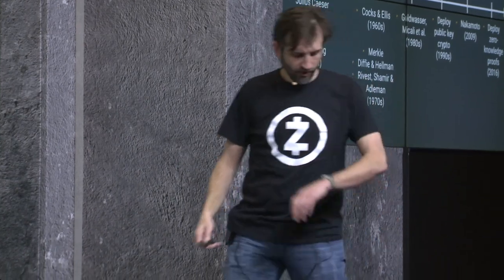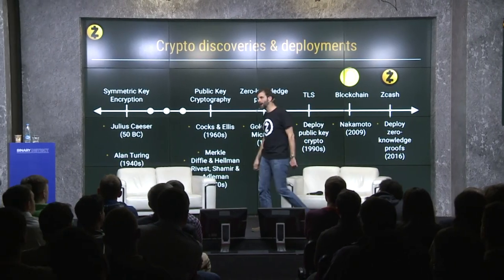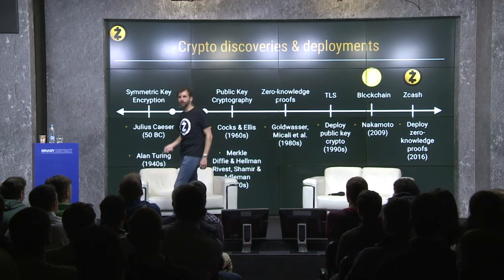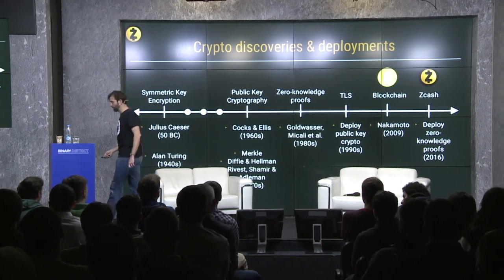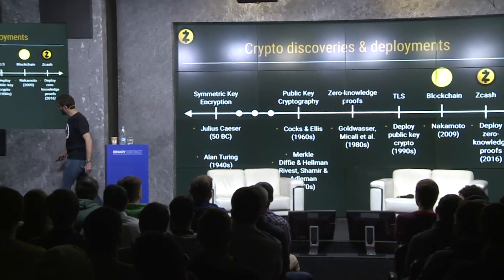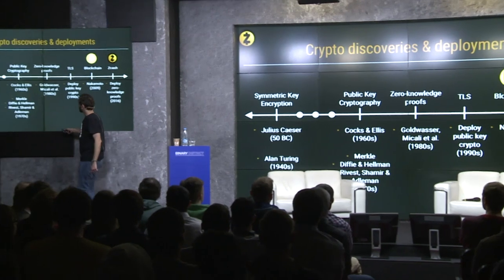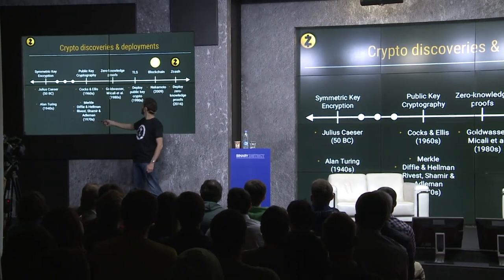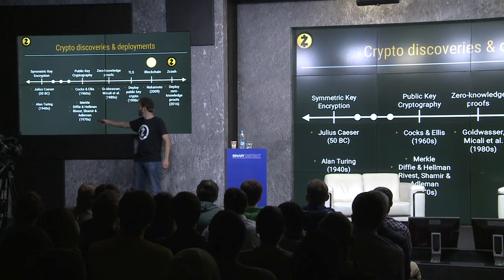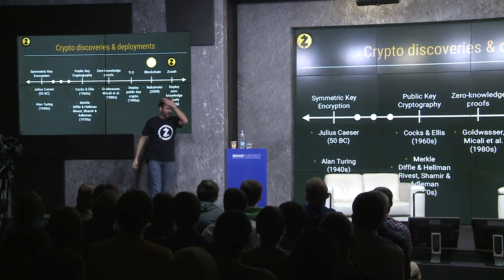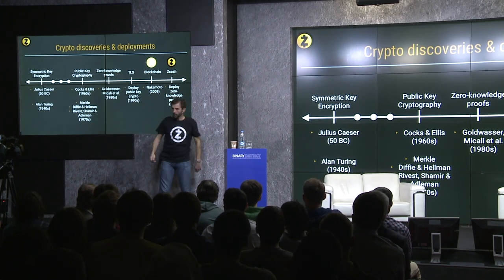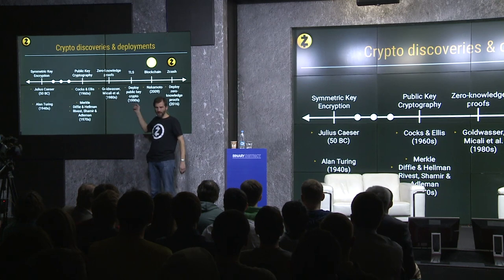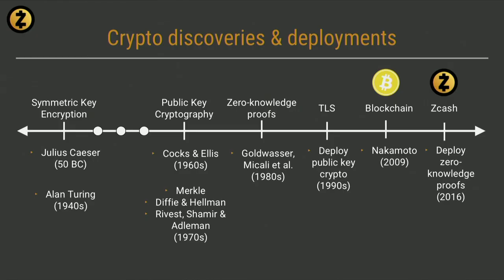It's an interesting fact that it takes about 20 years from a discovery until it becomes useful for lots of people. These discoveries were done in the 1970s, but it wasn't until the 1990s that the internet and public key cryptography got traction and got deployed to a large number of people.